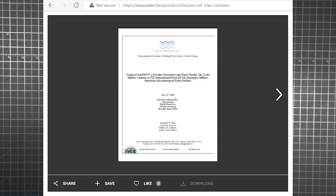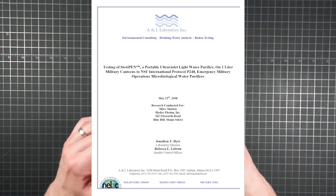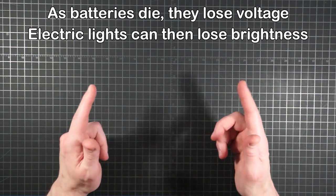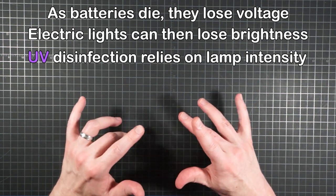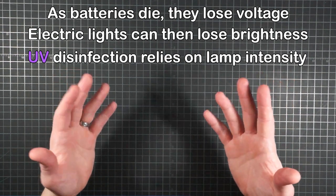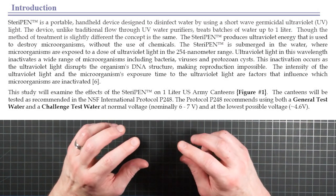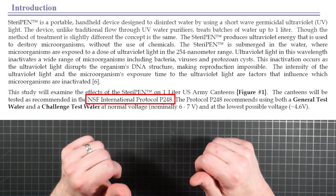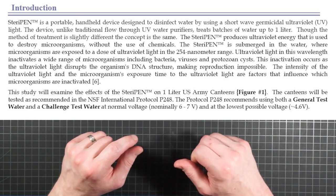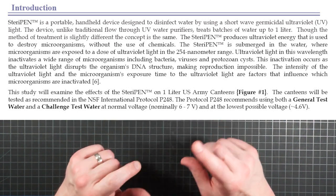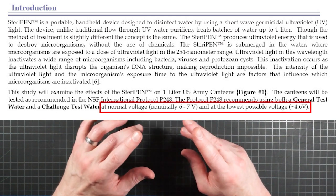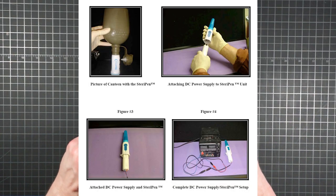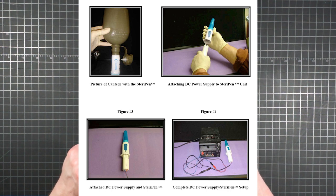A second report by the same lab investigated another potential issue that can arise when dealing with electronic devices. As your batteries die, they lose voltage. And in the case of an electric light, the lamp can lose brightness as the voltage drops. And with a disinfection method that relies on the power of its light, that can affect pathogen reduction. So for its testing, the military uses NSF protocol P248, which is a tougher standard for microbiological water purifiers than that of the EPA. So using US Army one liter canteens, the lab ran the standard tests for both the general and challenge test water. But under P248, they did it at both normal device voltage and the lowest possible voltage at which the device would still operate.